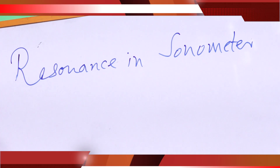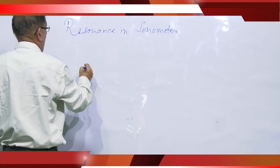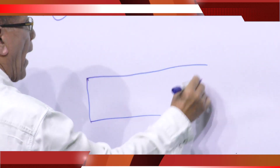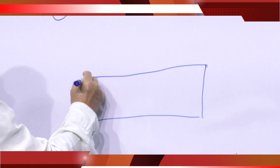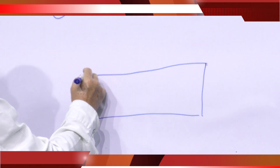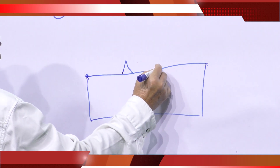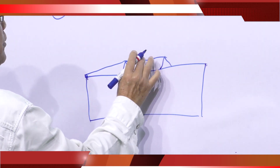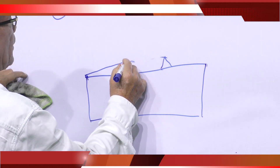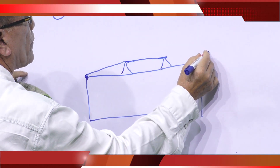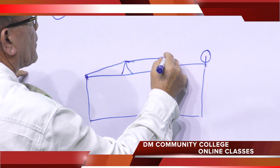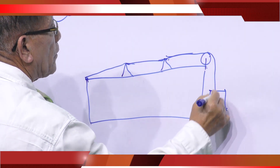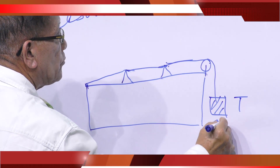If we have a string or wire stretched on a box, and we have two bridges — the end of the string is fixed at one end, and a string is stretched between the two bridges. We also have a pulley here, and a tension T, where a mass M is suspended.